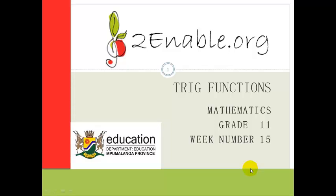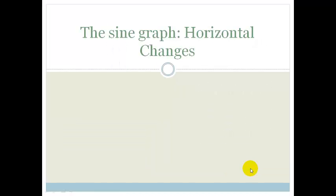Week 15. We're carrying on with trig functions. So far we've learned about how the functions change if we move them up and down, what happens when we squish them — in other words change the period or stretch them out — and how we can change the amplitude to make them very large or very small. Now we have to do our final change, which is our horizontal shift, and we're going to see what causes a horizontal change.